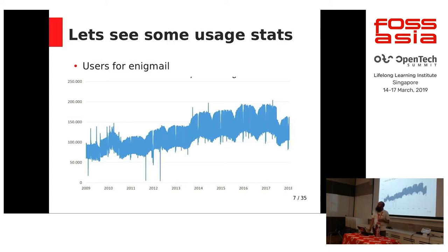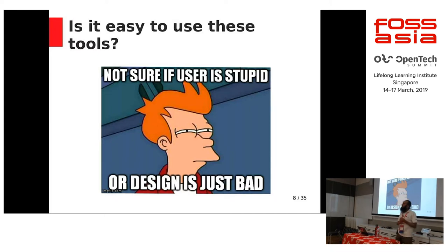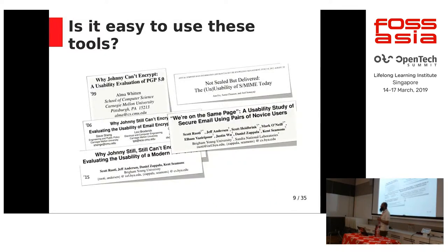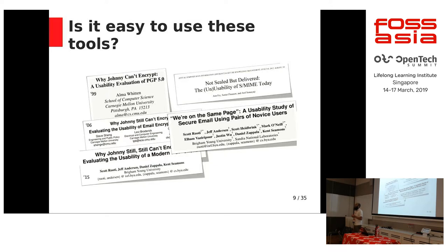There is a problem with both of these tools and the problem is usability. It is not really easy to use Enigma, OpenPGP, or S/MIME. There is a lot of work done trying to understand usability. There was a paper published in 1999 called "Why Johnny Cannot Encrypt," showing how difficult it is for a layman to use OpenPGP. Then in 2006 there was "Why Johnny Still Cannot Encrypt," showing no usability work had been done. In 2015 there was "Why Johnny Still Still Cannot Encrypt" — again, no progress on usability.